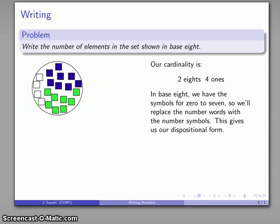Some authors call this a dispositional form, and the reason for that is we are still specifying what our units are. We have two eights, we have four ones, and anybody seeing this knows exactly what we're talking about.